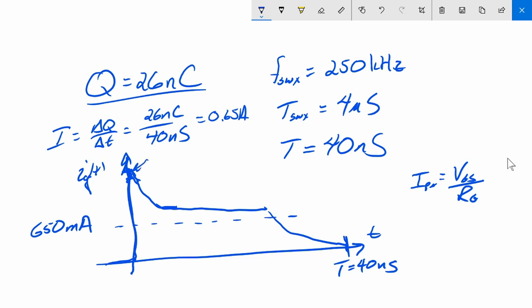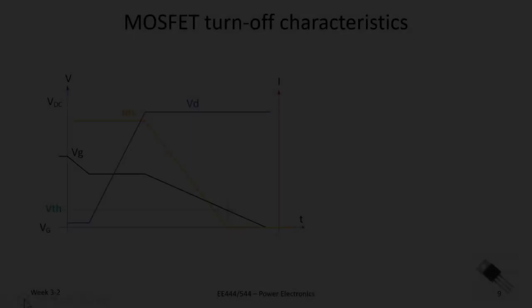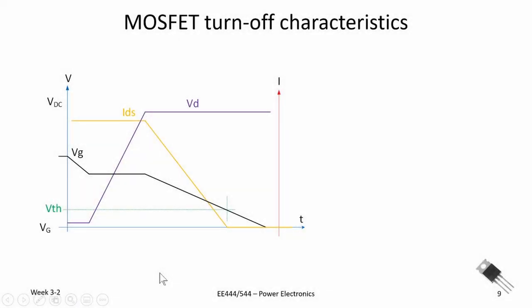This peak current and how fast we drive it determines what's called the gate driver, which we'll explore in later videos. Typically you cannot turn on such a device with a microcontroller — it just cannot source the required current. Turning a MOSFET off typically happens faster than turning it on, though the Miller Plateau is still present. The total time to turn off is a little bit faster than the time to turn on.